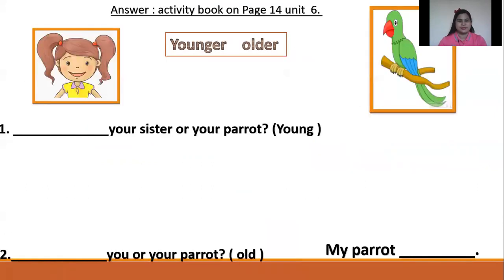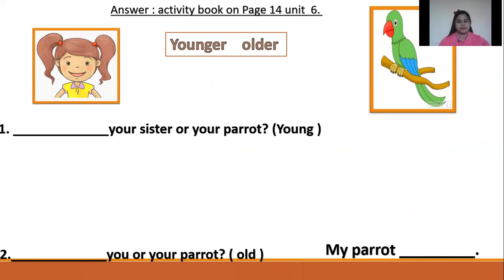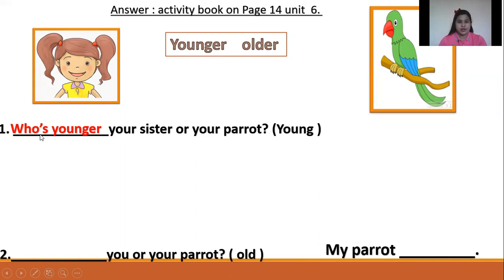Good job, students. Activity book on page 14. Let us answer. Who's younger, your sister or your parrot? WHO — because it refers to a person. My sister is younger. Who's younger? Your sister is younger.